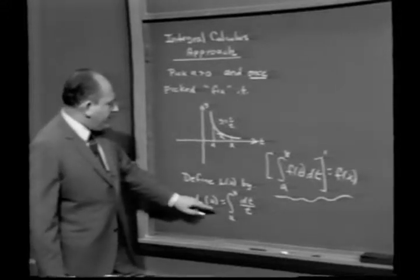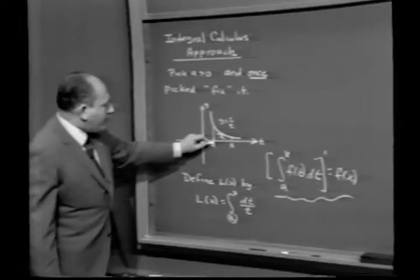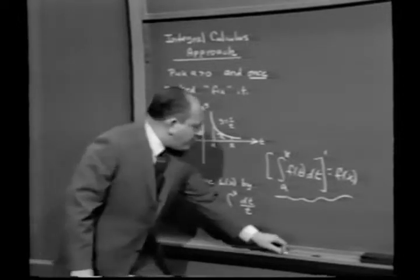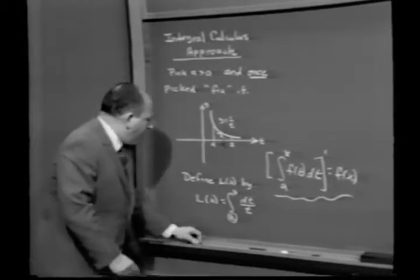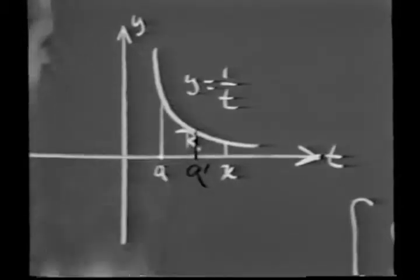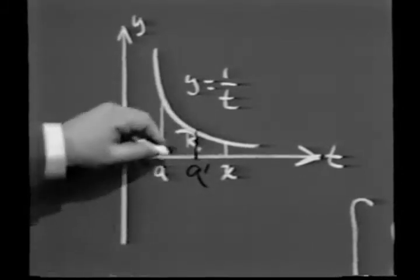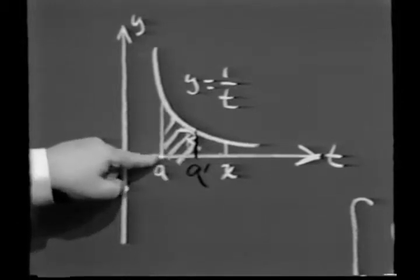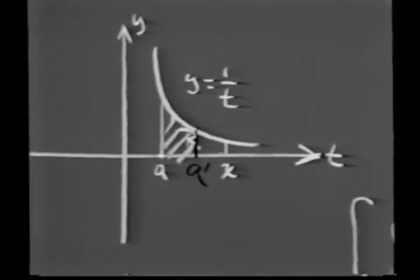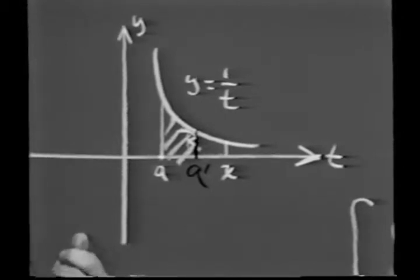Notice that I have a degree of freedom here. Namely, what that area is depends on where I choose a. Notice that if I choose a differently, changing a, let's call this a prime, changing a changes the area under the curve, but notice that it changes it by a fixed amount. In other words, notice that shifting a just changes L of x by a constant, just like the ordinary indefinite integral.